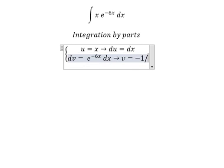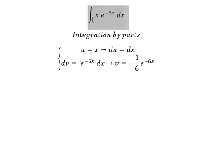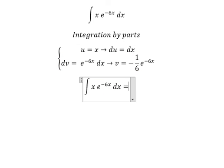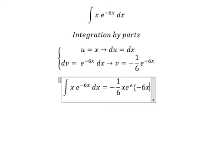negative 1 over 6 e to the power of negative 6x. Now we have u multiplied by v, so we have negative 1 over 6 x e to the power of negative 6x.